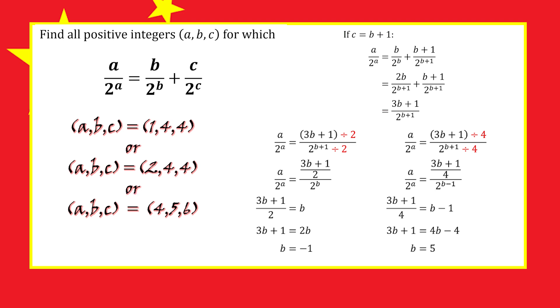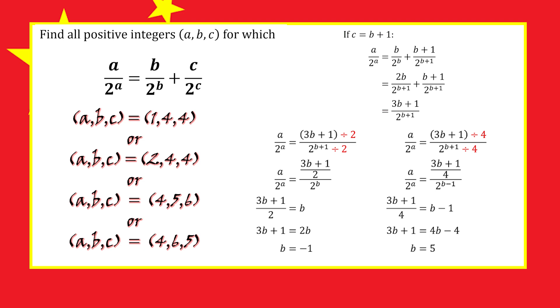This turns out to be the only other solution to the problem. We can switch b and c to get the triple (4,6,5), but there are no more solutions.